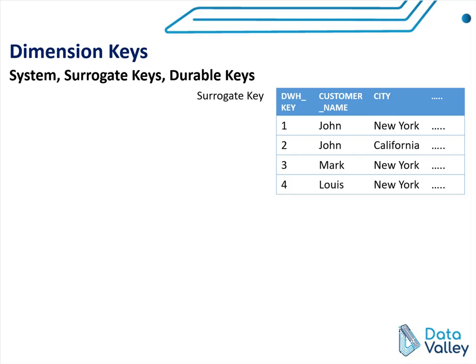The second type of dimension keys is the surrogate key. As discussed in the previous lecture, it is not recommended at all to use system or natural keys as your primary key for dimension tables. Surrogate keys come to solve this problem. They are auto-generated incremental sequences which help us to uniquely identify each record in our dimension table.